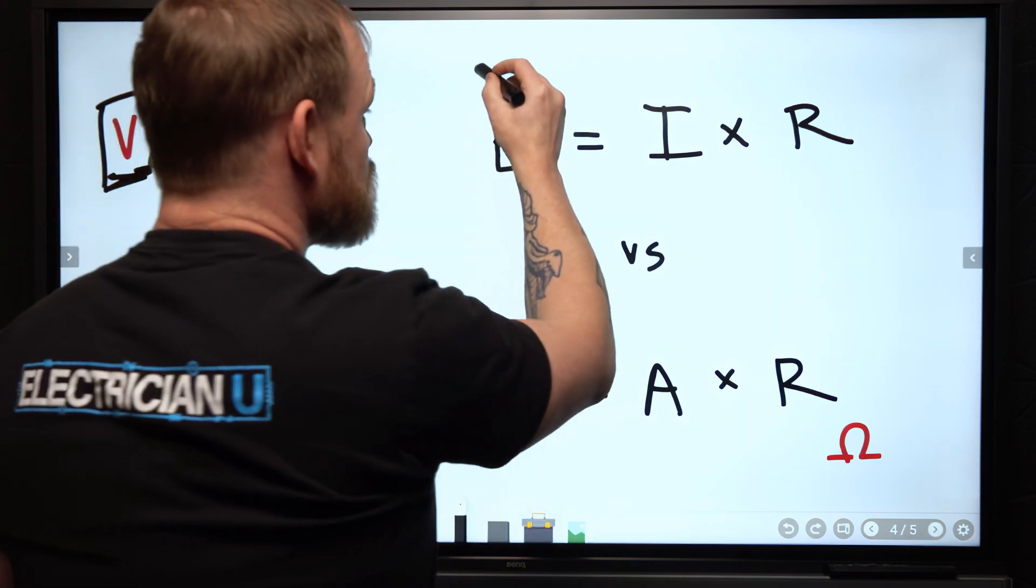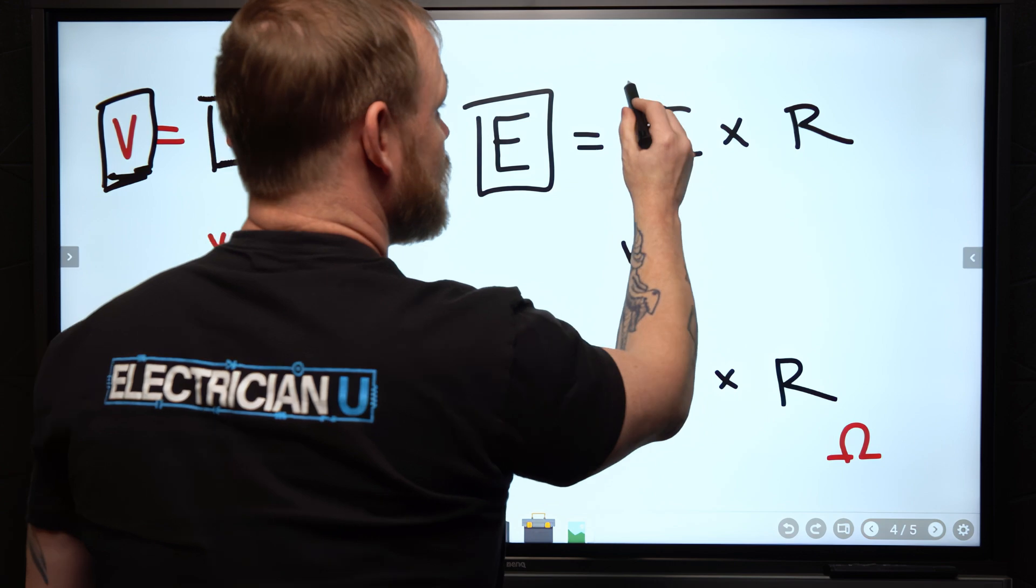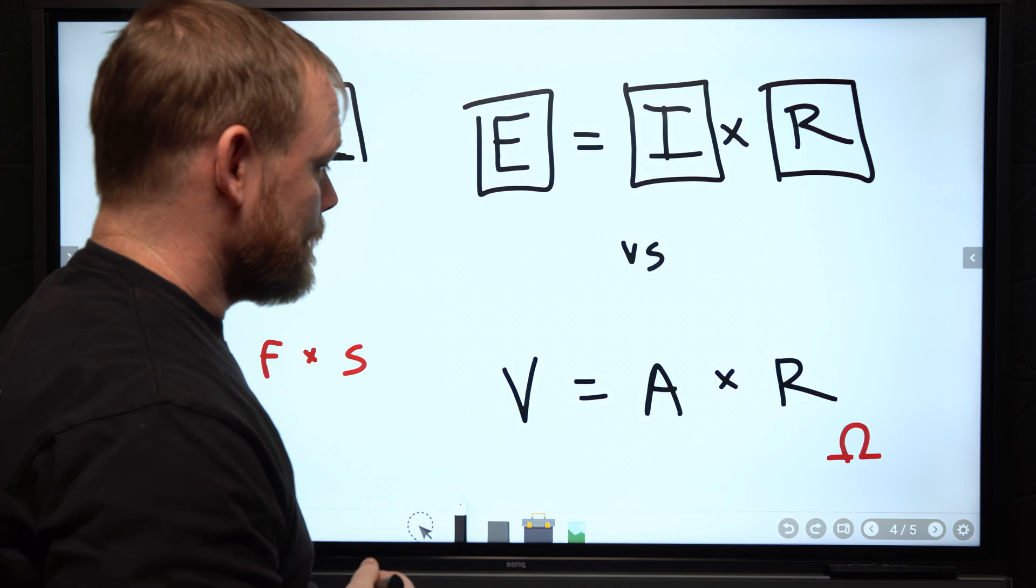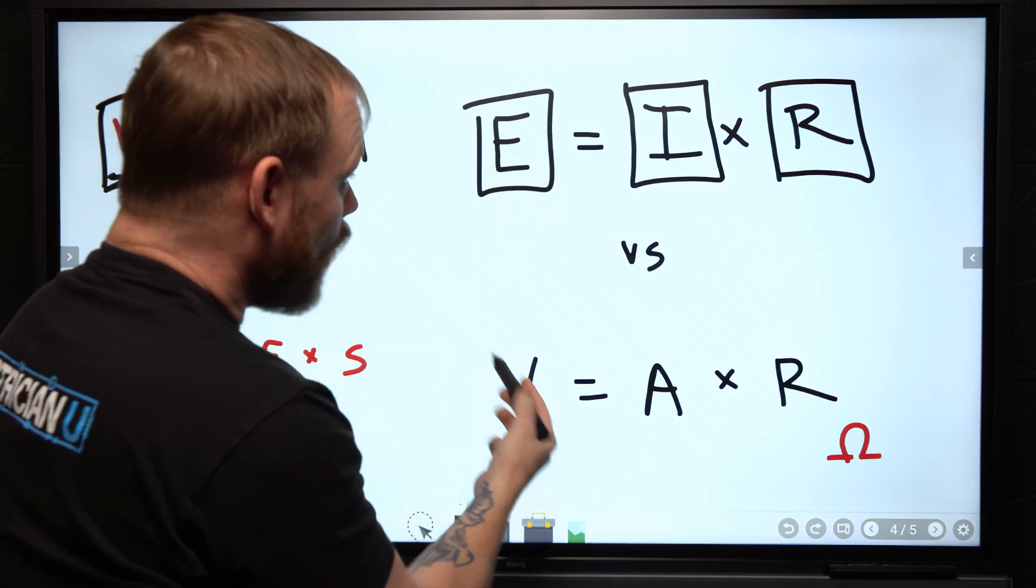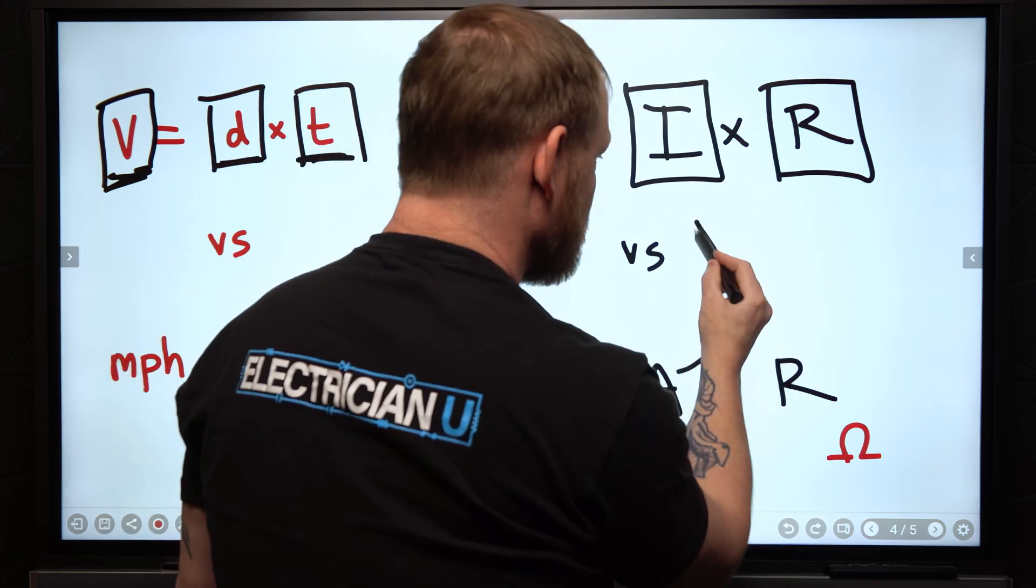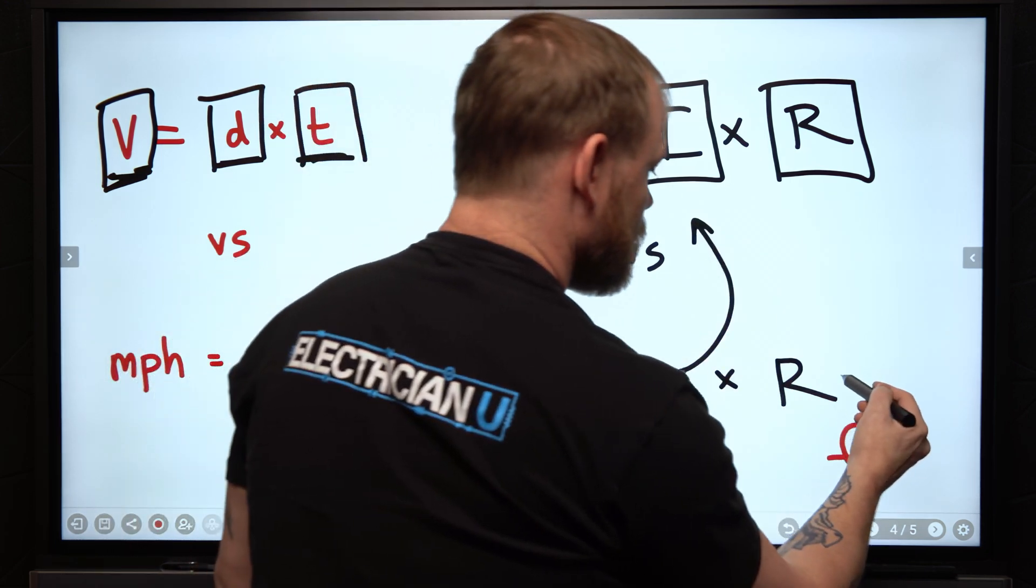And that's why the actual thing being measured is EMF times a rate of current flow through a resistance. And so we use the volt to give us the quantity of EMF.